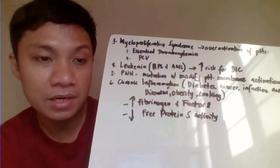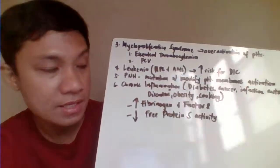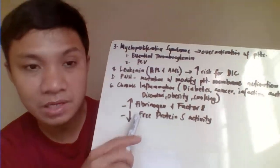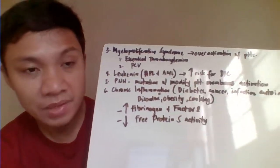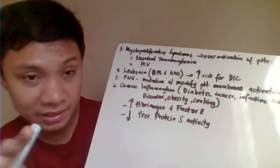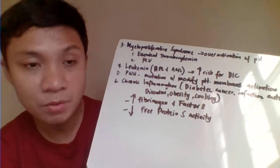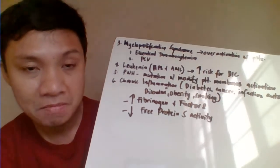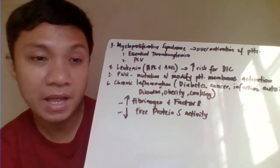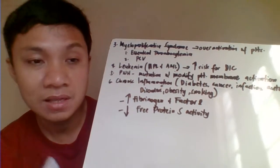Chronic inflammatory conditions such as diabetes, cancer, infection, autoimmune disorders, obesity, and smoking increase thrombotic tendency because they cause increased fibrinogen and increased Factor VIII. Fibrinogen is a substrate for clotting, and unregulated Factor VIII leads to clotting. Additionally, chronic inflammation causes decreased production of free protein S, so there's nothing to bind protein C to form the APC-protein S complex to digest Factor V and Factor VIII.